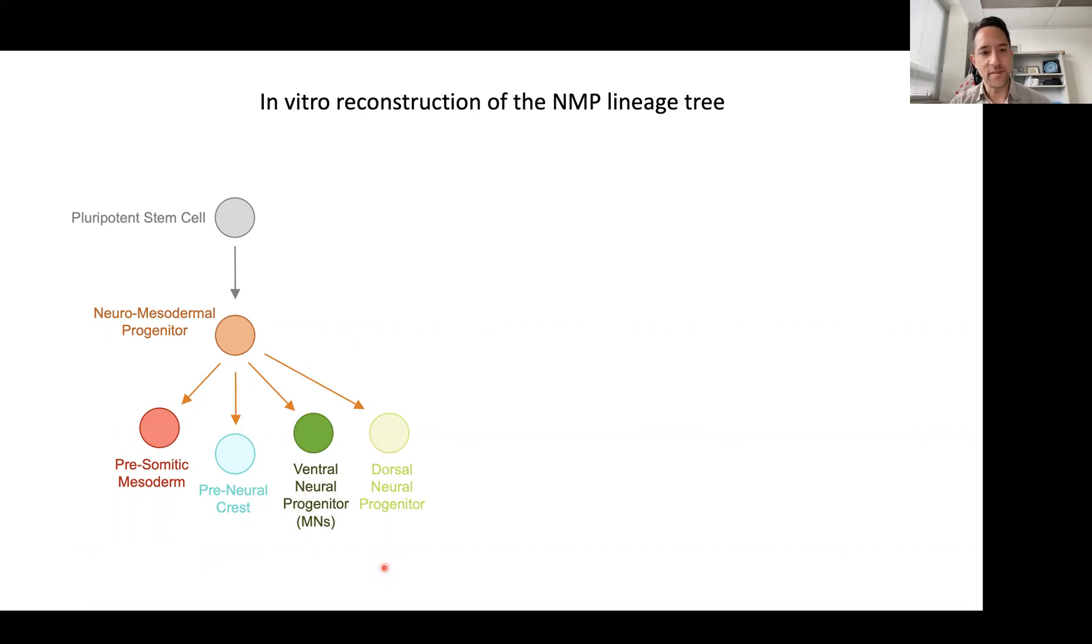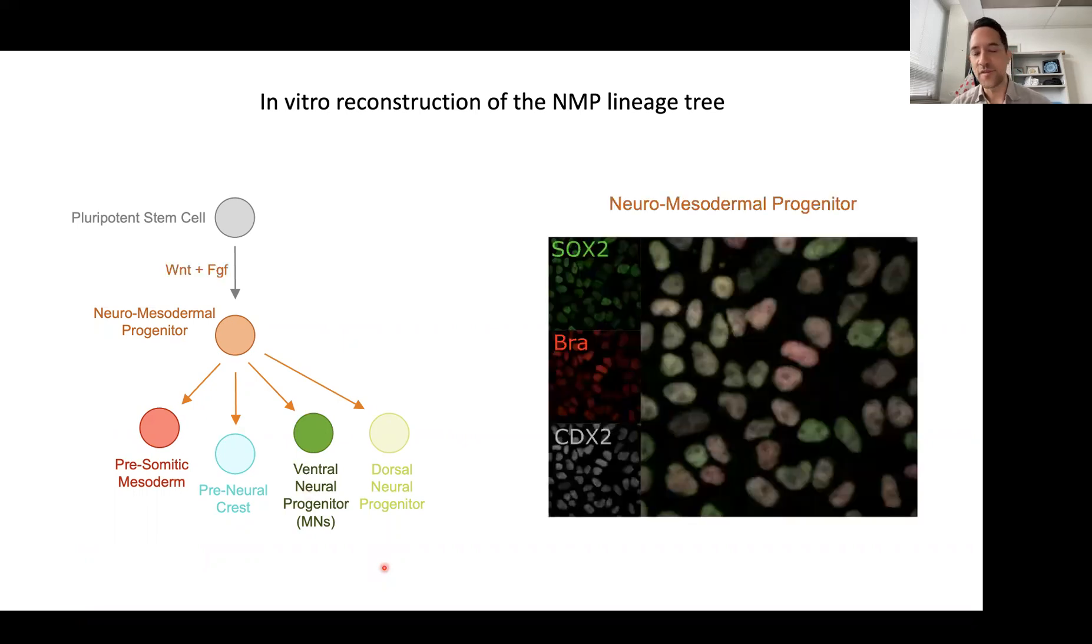I've been working on this for a number of years now, and I think I've made some progress. I won't go into all of the details of the protocols, but just briefly, we found like other labs have found that Wnt and FGF were required to generate our NMPs. Here you can see a staining for three transcription factors.